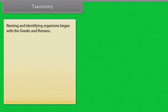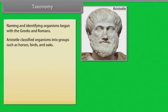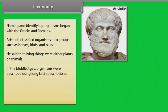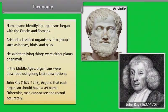Naming and identifying organisms began with Greeks and Romans. Aristotle classified organisms into groups such as horses, birds and oaks. In the middle ages, he said that living things were either plants or animals, and organisms were described using long Latin descriptions. John Ray (1627–1705) argued that each organism should have a set name, otherwise men cannot see and record accurately.